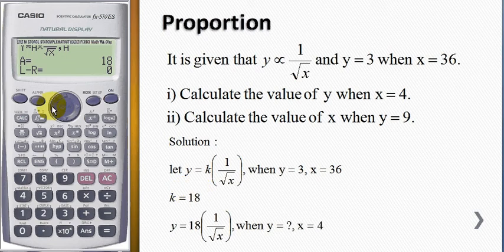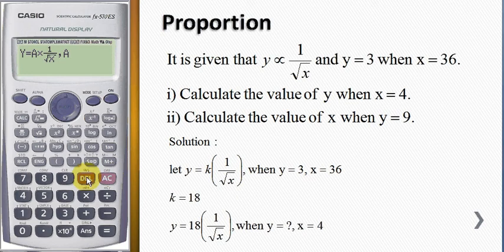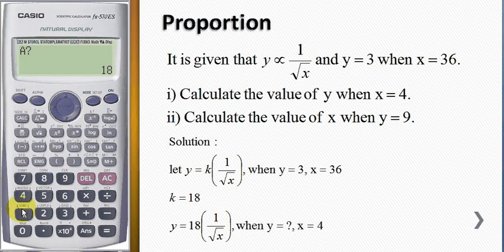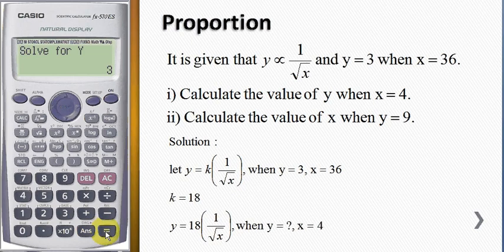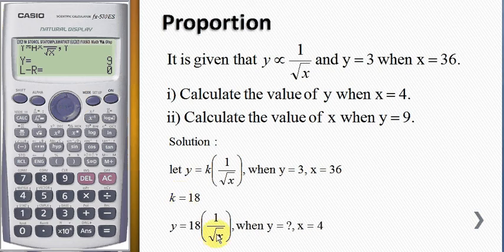So k equals 18. After that, we want to solve for the value of y. I enter y and press shift solve. When a equals 18 and x equals 4, solving for y with an initial guess, the calculator gives y equals 9. The square root of 4 gives 2, 18 divided by 2 is 9, so y equals 9.